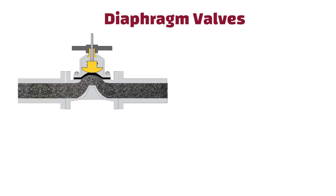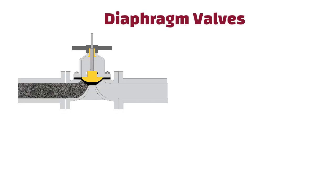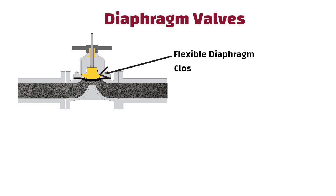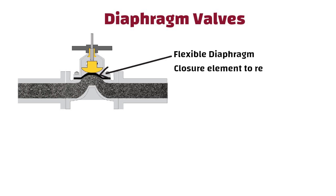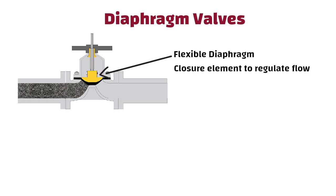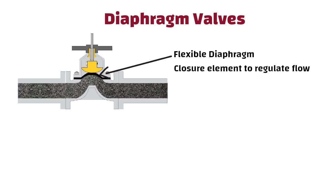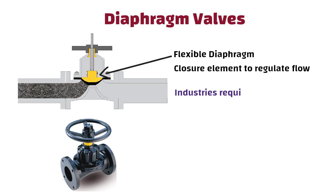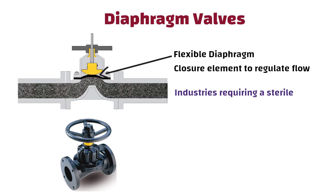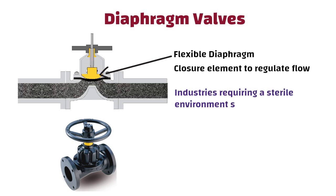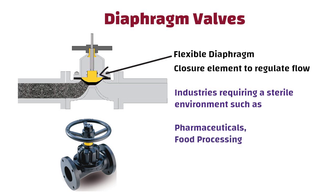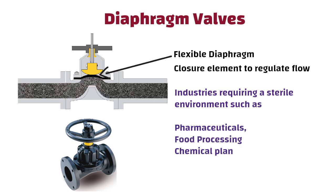Diaphragm valves use a flexible diaphragm as the closing element to regulate flow. These types of valves are commonly used in industries requiring a sterile environment, such as pharmaceuticals, food processing and chemical plants.